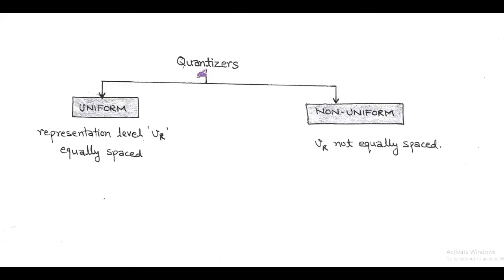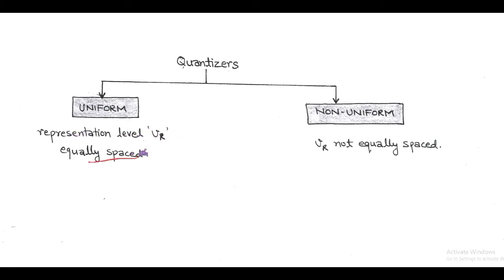Hello friends. In this session, we are going to discuss classification of quantization. Based on the classification, quantization are of two types: first is uniform quantization and second is non-uniform quantization. In uniform quantization, output representation levels have equal step size. But in non-uniform quantization, step sizes are not equal for representation levels.